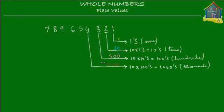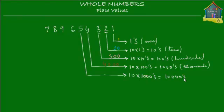Similarly, the 5 over here is one place to the left of the 1,000's place, so its value is 10 times higher than the 1,000's place. 10 times higher than the 1,000's place is 10,000. So this is the 10,000's place, which gives this digit 5 a value of 5 times 10,000, which is 50,000.